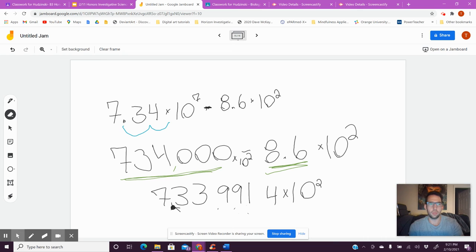And if I look back at my original problem, there's two decimal places here, there's one here, so I need to match that and get it to here.